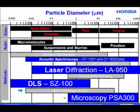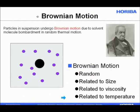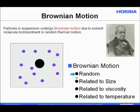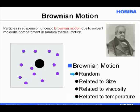When we use dynamic light scattering, we're not looking at the particle directly the way an electron microscope does. Rather, we're probing particle motion. Particles in suspension undergo Brownian motion due to solvent molecule bombardment and random thermal motion — water molecules kick the larger particles and they move around. Brownian motion is random, related to particle size, viscosity, and temperature. Since we can know viscosity and temperature, we interpret the data using a statistical technique to extract particle size.